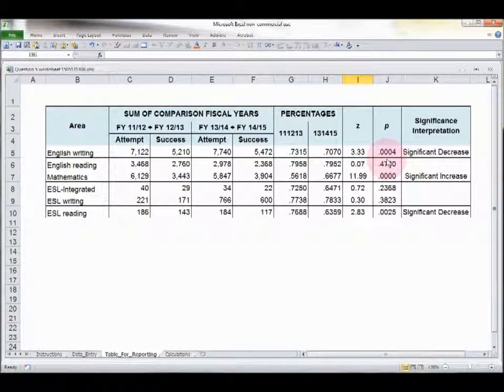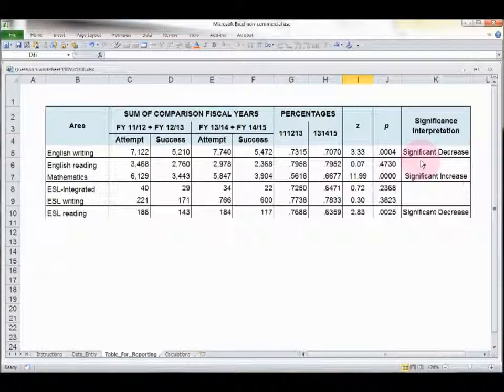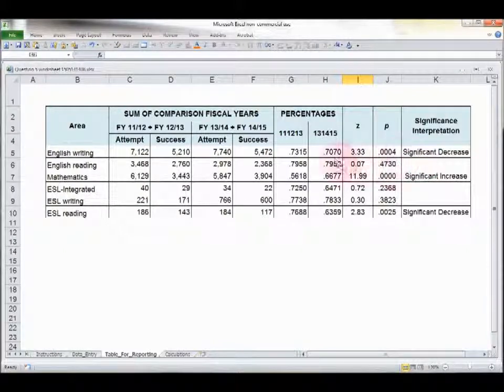Now, as a refresher, we all remember that a p-level of .05 or smaller, so .05, .04, .03, .02, those are all significant. Anything larger than p-.05 will not be considered significant. And for your convenience, we've also included a feature that will automatically interpret it for you. So looking at this from beginning to end, here's English Writing. We can see that it's gone from a success rate of 73% a few years ago to 70% more recently. This is a significant finding. It's a significant decrease. So in your fiscal year 15-16 basic skills expenditure plan, you would want to address that. What do you plan to do to try to turn that around and bring rates of success back up?